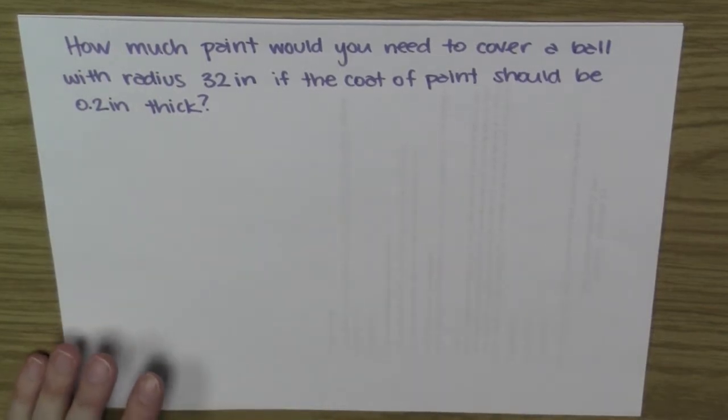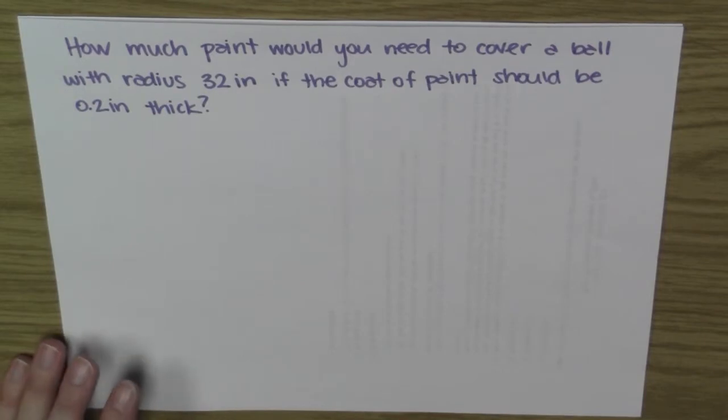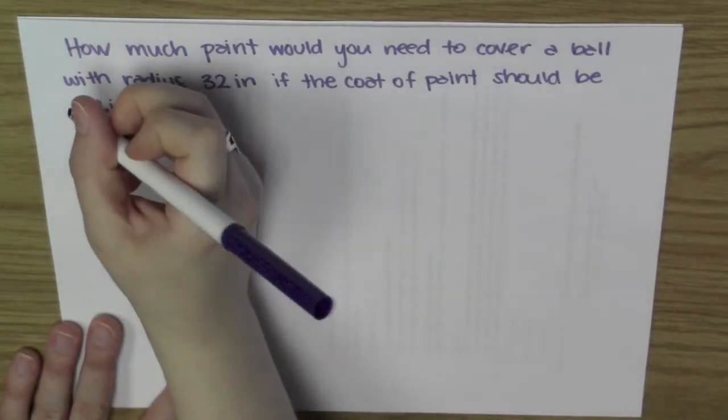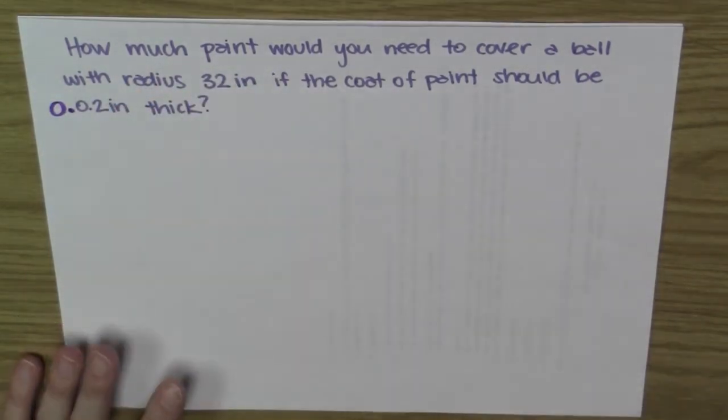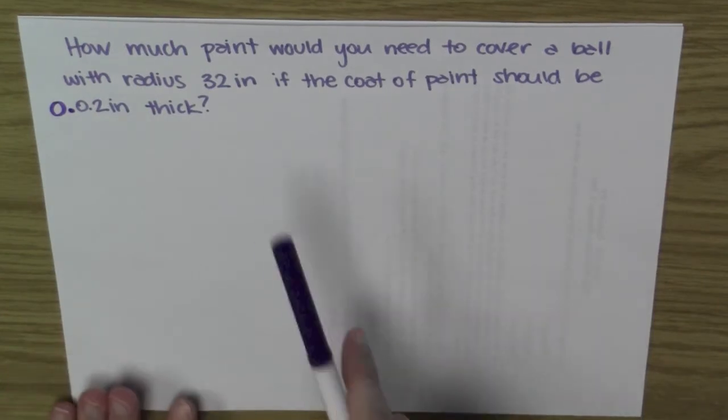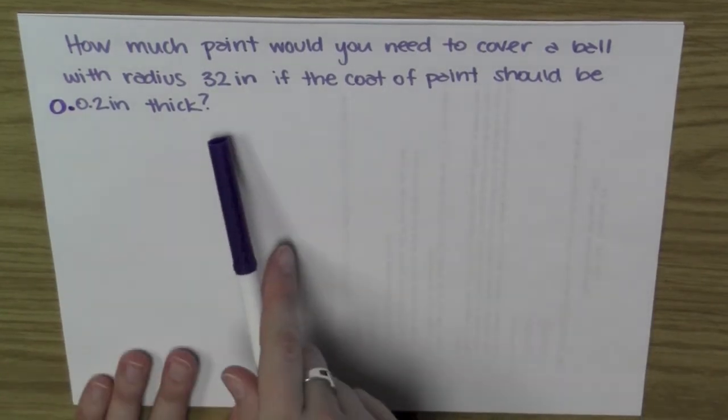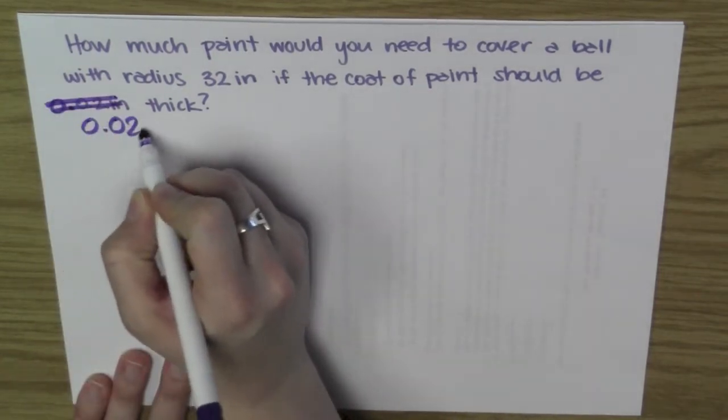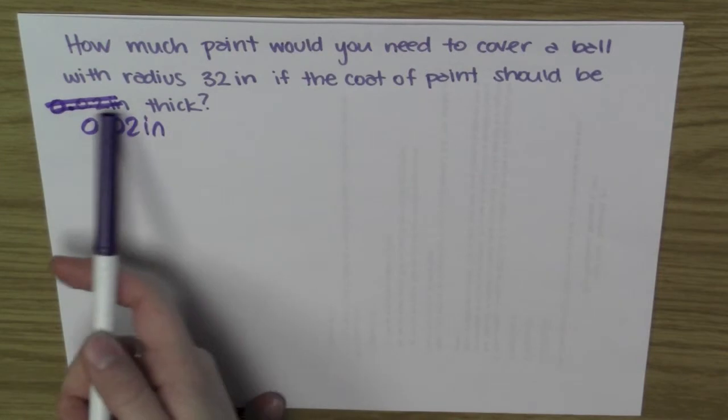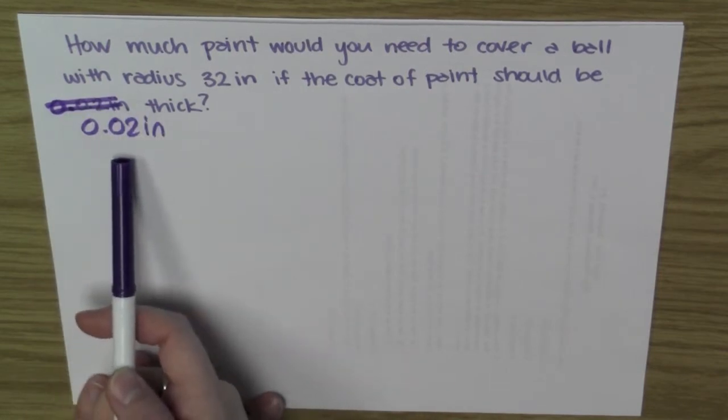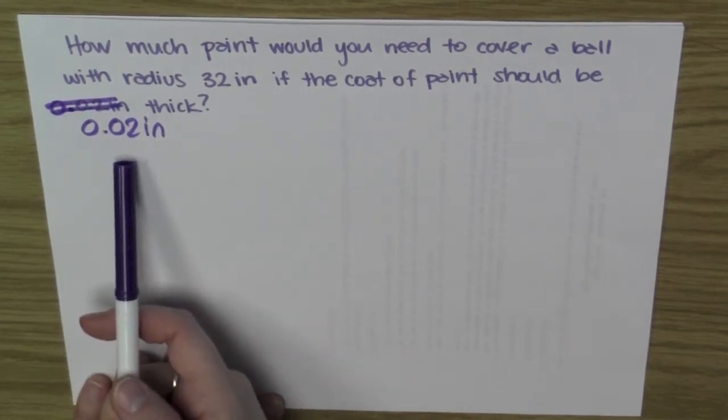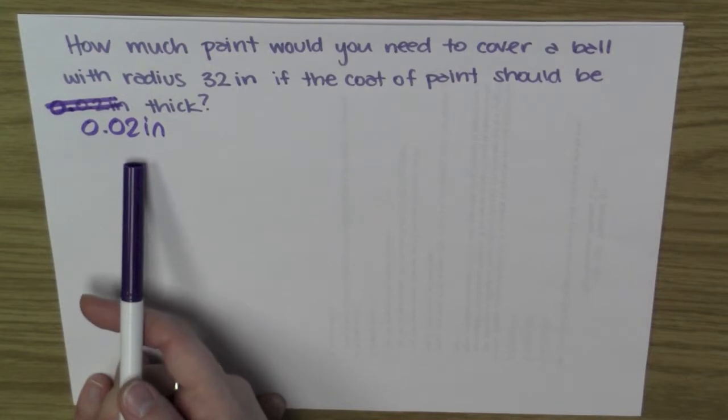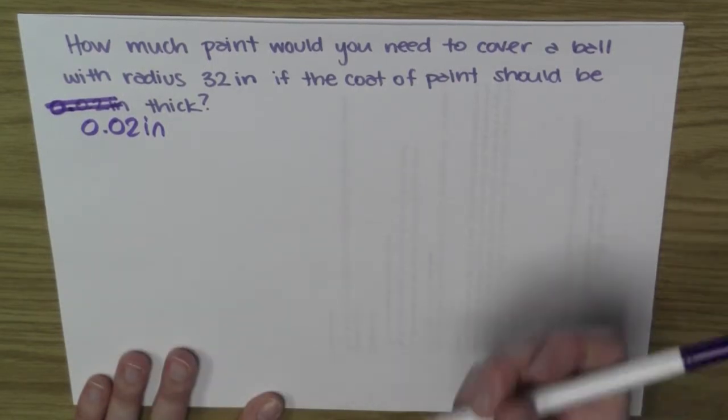How much paint would you need to cover a ball with radius 32 inches if the coat of paint should be 0.02 inches thick? So in this case, what I'm asking is, I want to change the radius of the ball by 0.02 inches by applying 0.02 inches of paint to the ball, how much will I change the volume by?